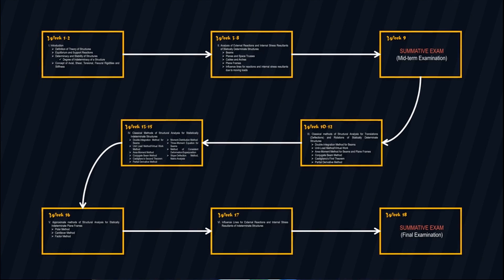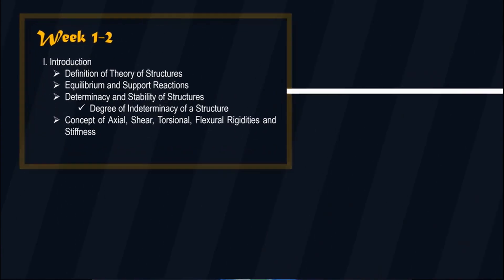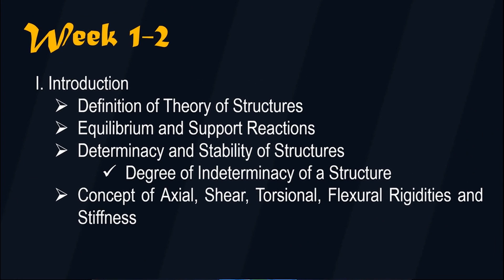This flowchart showcases the budgeting of topics as reflected in your course outline. For weeks 1 to 2, the introduction covers: defining theory of structures, equilibrium and support reactions, determinacy and stability of structures including degree of indeterminacy, and the concept of axial, shear, torsional, flexural rigidities, and stiffness.